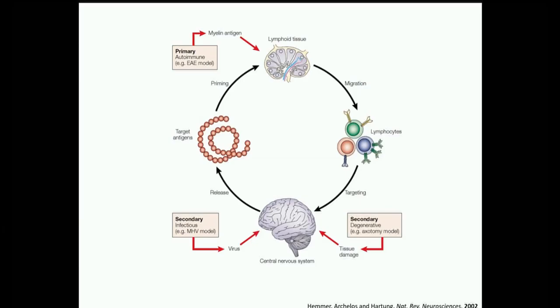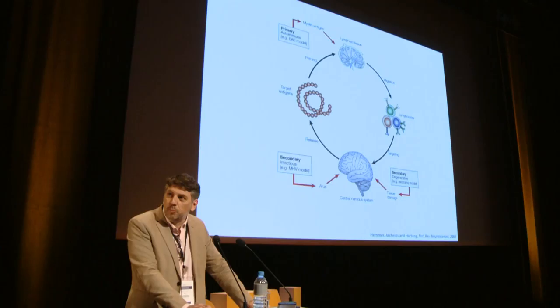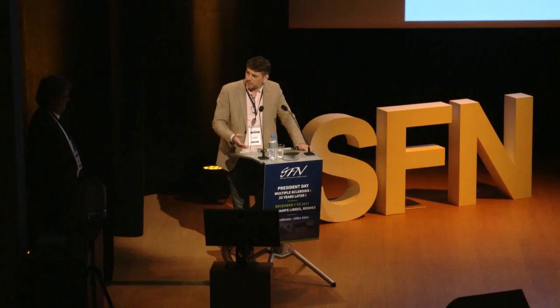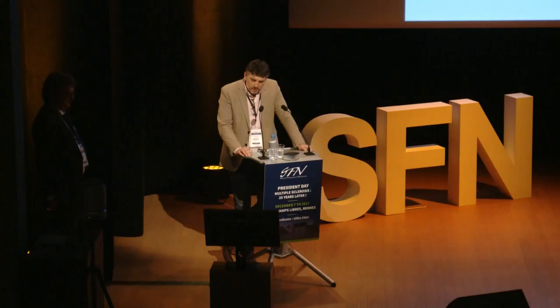A picture from Professor Hartung's paper published in Nature Neuroscience Reviews in 2002 is referenced — a paper used in thesis work — where he summarized all the hypotheses leading to MS, including whether MS is a primary autoimmune disease, which is now more or less consensual, or triggered by infectious agents such as viruses.